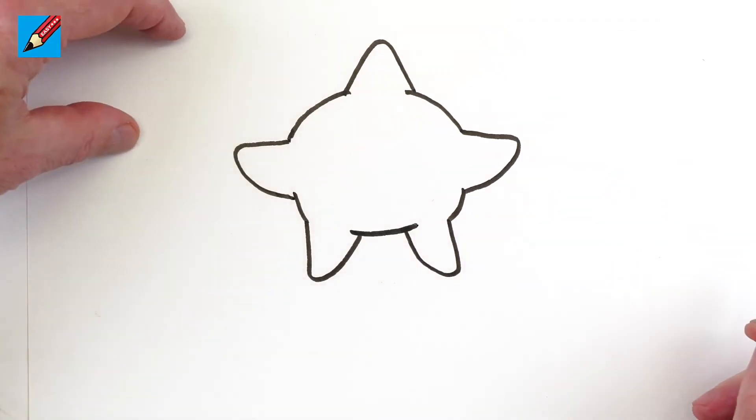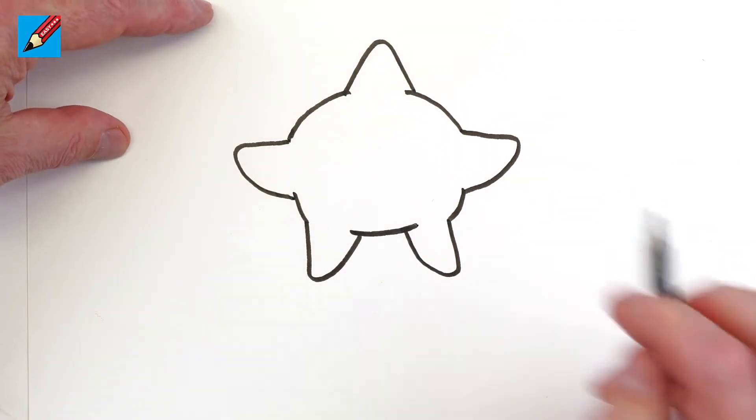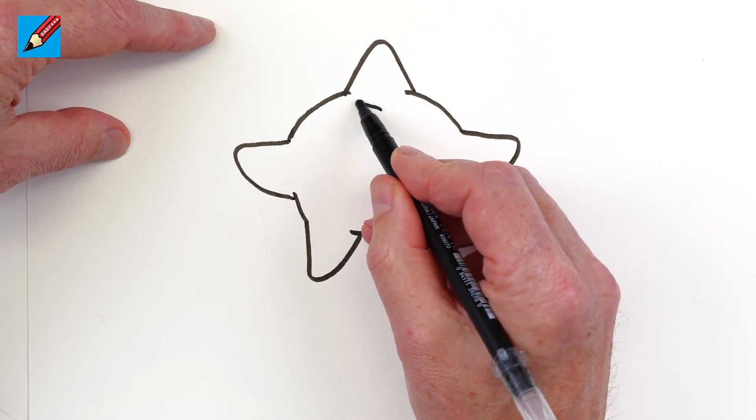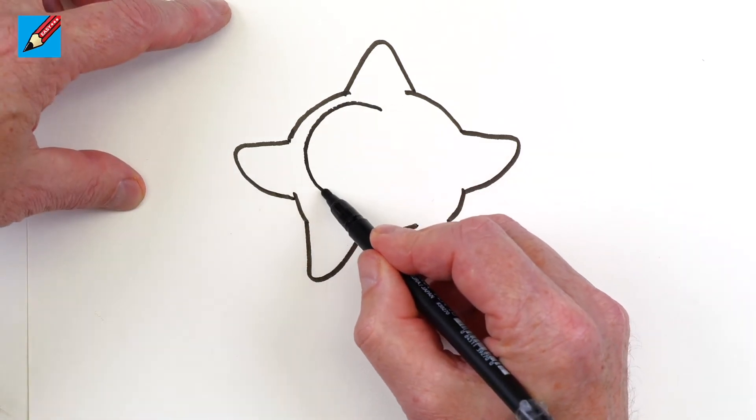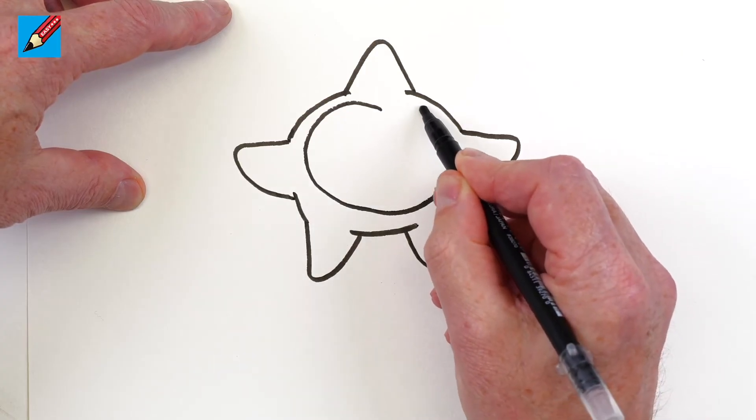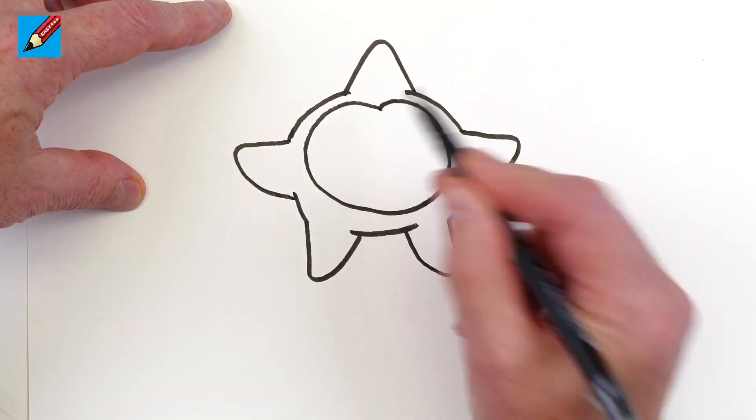Have a curve going across there, and then we need to draw the face, which is going to be a little bit like an owl in a funny sort of way. It goes up and then comes down like that.